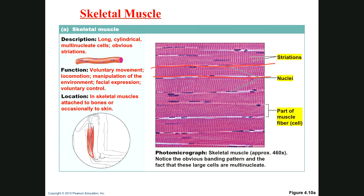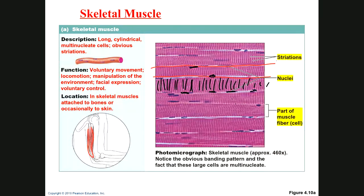Skeletal muscle cells are rod-shaped. Because they're so big and are made from many cells that came together during development, they have more than one nucleus — they're multinucleated. You can see many nuclei within the cell. The cell is filled with contractile proteins, which create the pattern of striations you see. There's so much contractile protein that organelles are pushed to the very surface of the cell. This gives skeletal muscle its striated, multinucleated appearance.